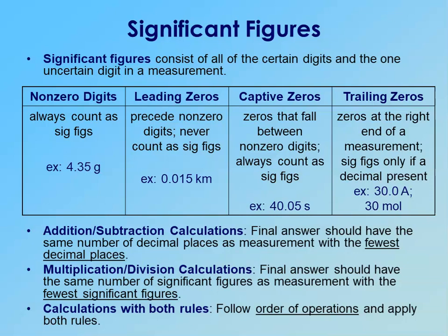Scientific notation is just a way to write really big or really small numbers. If your number is large, you're going to have a positive exponent. If your number is small — less than one — you're going to have a negative exponent.